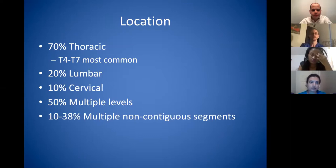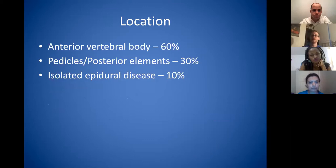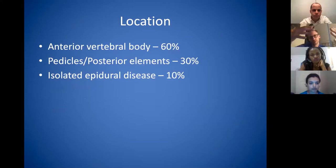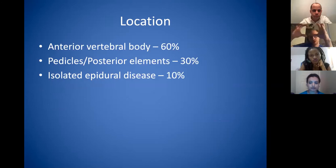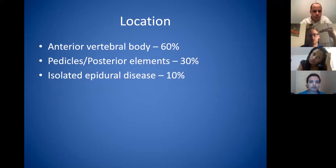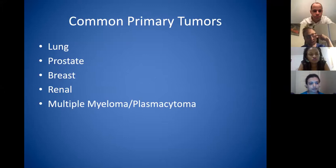The most common location is thoracic — 70%, with T4 to T7 being most common. 50% involve multiple levels. The anterior vertebral bodies are involved in the majority of cases. This is a major surgical challenge: getting around the spinal cord in the thoracic spine is very difficult because you can't retract the spinal cord. You have to work around it — sometimes taking out an entire pedicle to get in front. These patients are often very sick, on chemotherapy, and need radiation. This really is a multidisciplinary disease that I can't stress enough.